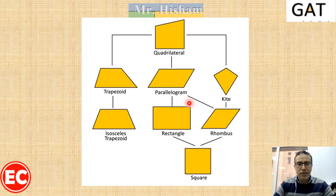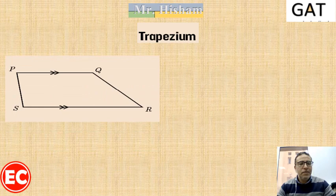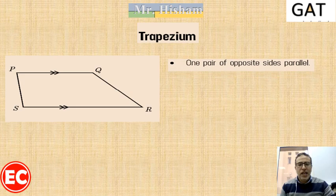The first quadrilateral we are going to start with is the trapezium. A trapezium is a shape in which two sides are parallel only. As we can see, PQRS is a quadrilateral where two sides are parallel: PQ and RS. So we call it a trapezium — a quadrilateral in which one pair of opposite sides are parallel.